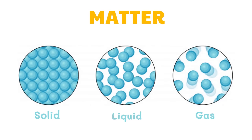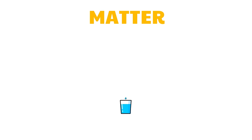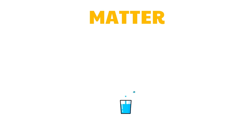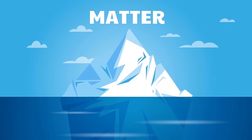Variety in matter can be traced to the nature of the particles composing them. One example of matter noted for its variety in physical form is water. Water is a common substance that we encounter every day. The icebergs, the ocean water, and the vapor in the sky are all considered water, but they are of different states.